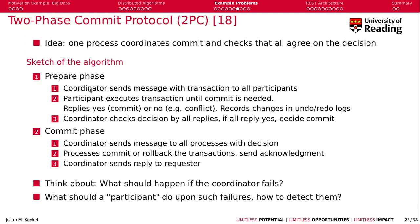In the prepare phase, an elected coordinator sends a message with the transaction to all participants. The participants execute the transaction until a commit is needed, then reply indicating whether the commit has been made or there is a conflict — for instance, because another transaction was executed at the same time that changed the status. Notes about the changes are recorded in undo or redo logs. The coordinator checks the replies, and if every process replies with yes, the commit is possible.